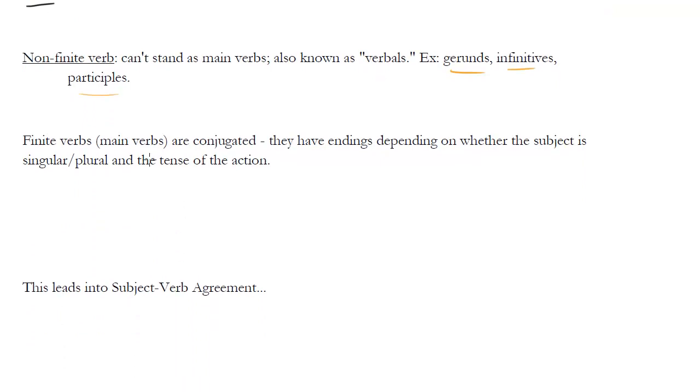So remember, let me just say a little bit more about what I mean by finite verbs being conjugated. So when we say a finite verb is conjugated, we mean that they have endings depending on whether the subject is singular, plural, and the tense of the action. So English doesn't really have this effect very much. If you look at other languages like German, for instance, German has a very specific conjugation system.